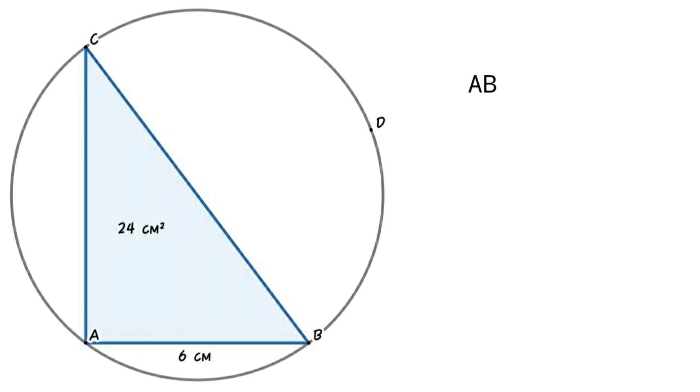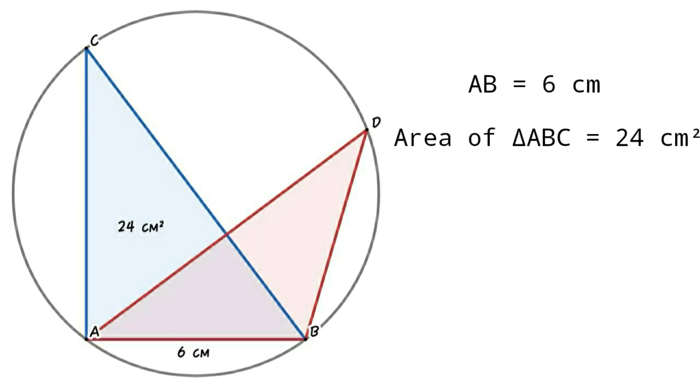In a circle, AB equals 6 centimeters, and right angle triangle ABC has an area of 24 square centimeters. Drawing another triangle ABD.